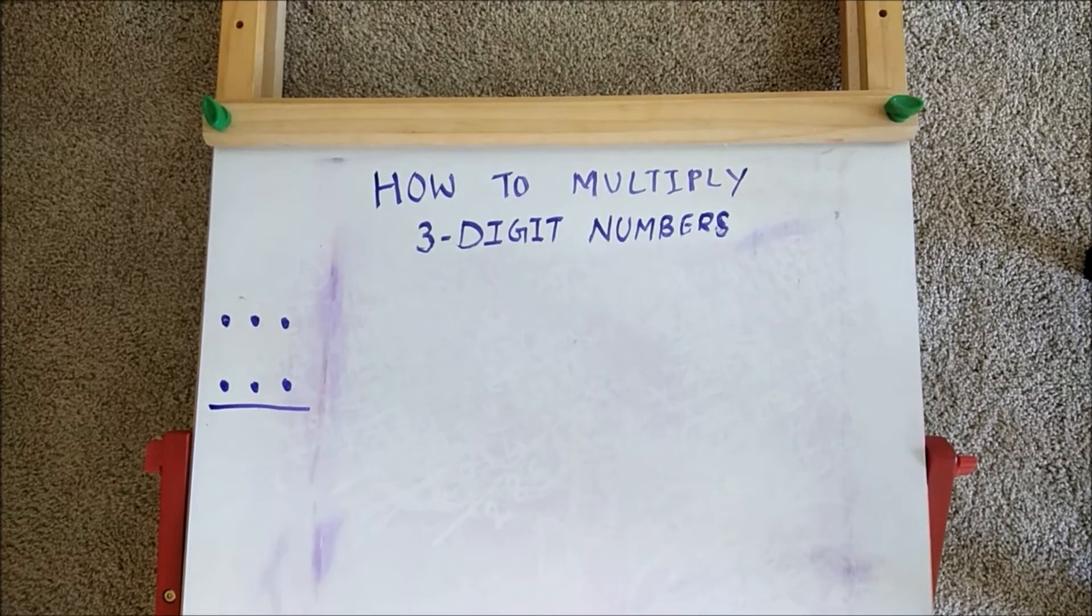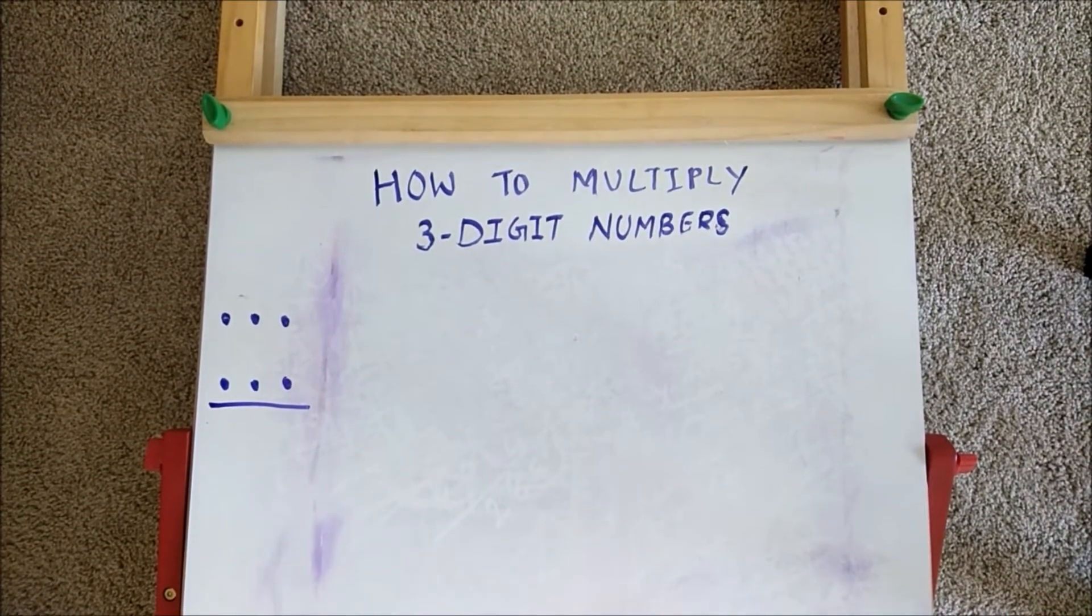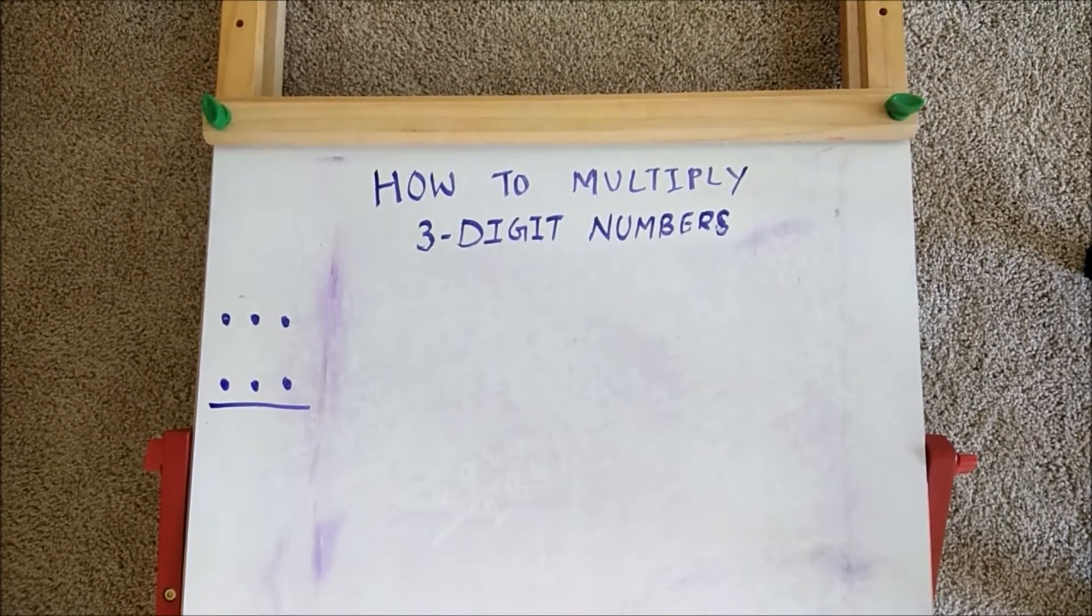In this video we will see the method to multiply 3-digit numbers quickly. This method is similar to the method we have seen for 2-digit numbers. It involves 5 steps.